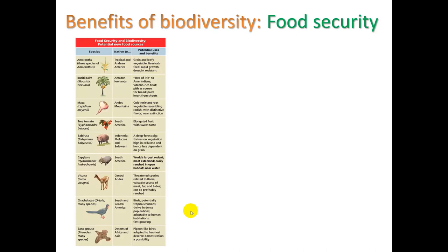Another benefit of biodiversity is food security. Here's a table of some foods that we don't commonly eat now but might in the future, like amaranth — a grain that grows in tropical and Andean areas, which I've actually eaten and it's really good. There's also maca, a root vegetable with some medicinal values. Other animals listed here might end up being hunted and eaten for food in the future. As climate change occurs, we may be relying on some of these.